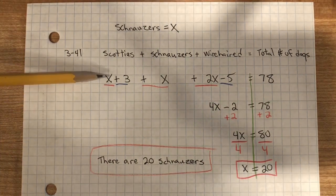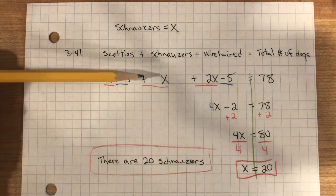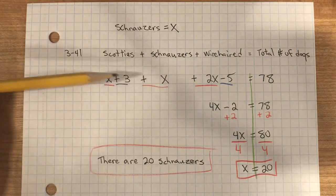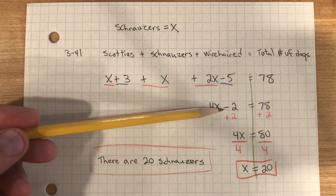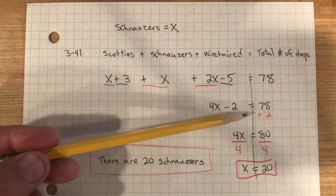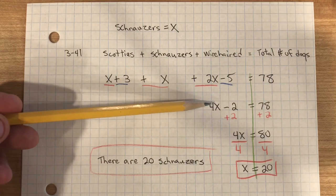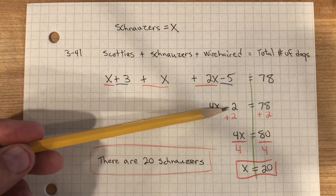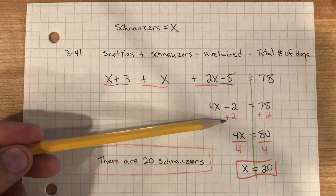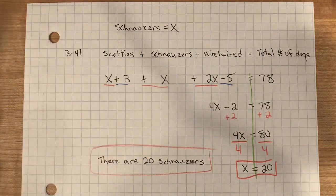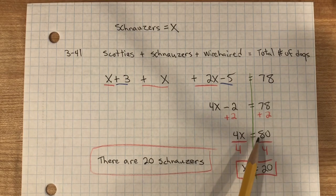In order to solve this, we need to combine like terms. x plus x plus 2x equals 4x. Negative 5 plus 3 is negative 2, equals 78. We want to find out the value of x, so we add 2 to both sides. Inverse property of subtraction is addition. What you do to one side, you do to the other. I've created a zero pair. 78 plus 2 is 80.